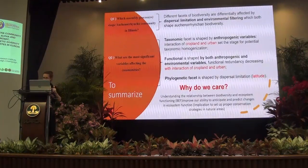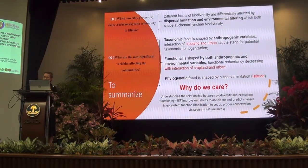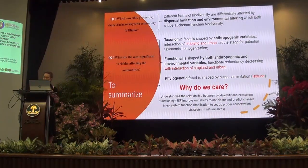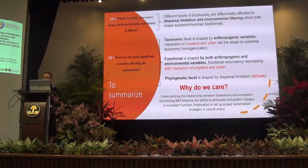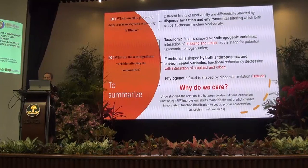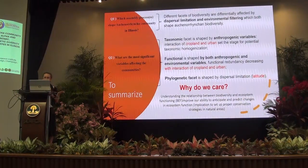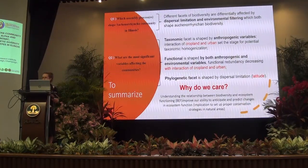Coming back to our questions: we were trying to understand what assembly processes affect the carabid community in Illinois. We discovered that, in different ways and for different reasons, dispersal limitation and environmental filtering are affecting the community in Illinois. To answer the second question — what are the significant variables doing the work — we know that the taxonomic facet is mainly affected by anthropogenic variables such as presence of croplands and urban area in the surroundings. Functionally it is shaped by both anthropogenic and environmental variables. The phylogenetic facet is the only one affected by latitude, which explains the dispersal limitation.